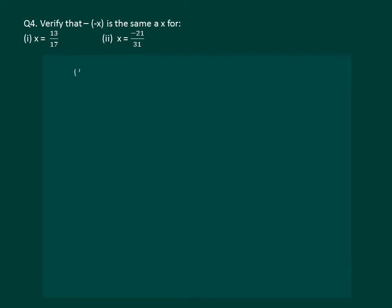Now let us verify the second part. That means that x is minus 21 by 31. Then additive inverse of x is plus 21 by 31. That means minus x is plus 21 by 31.